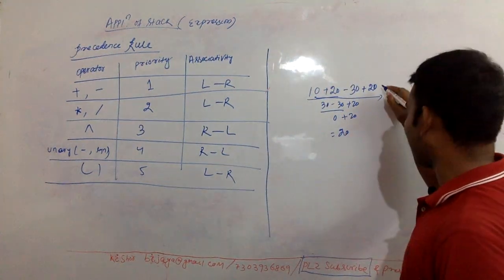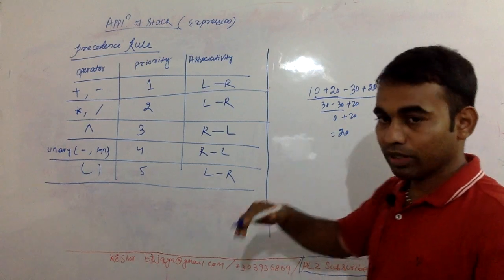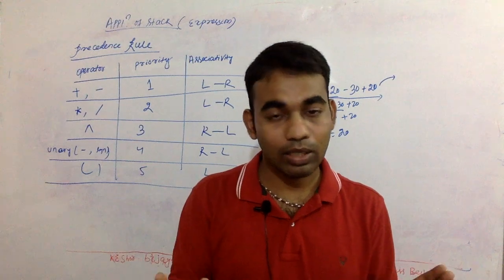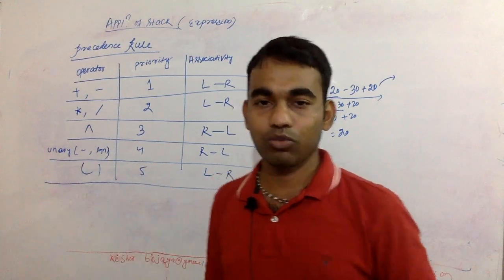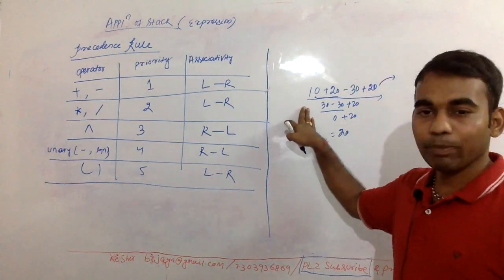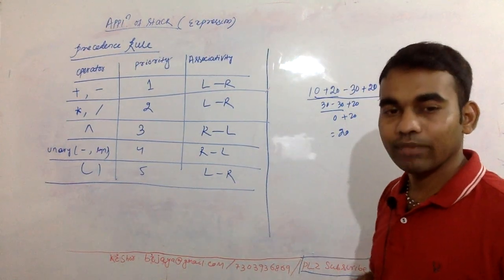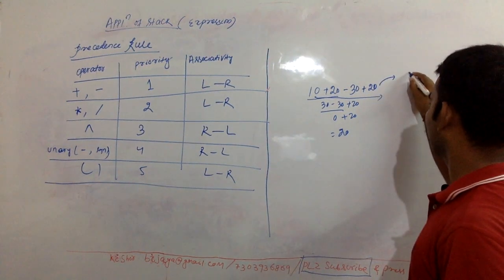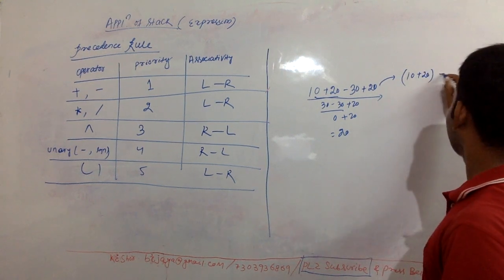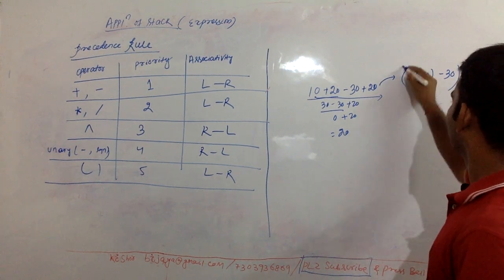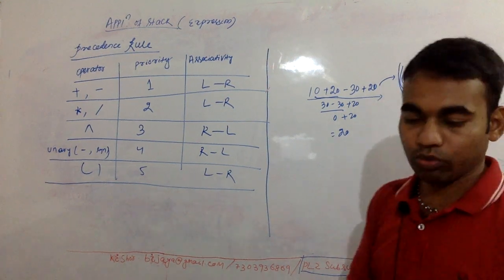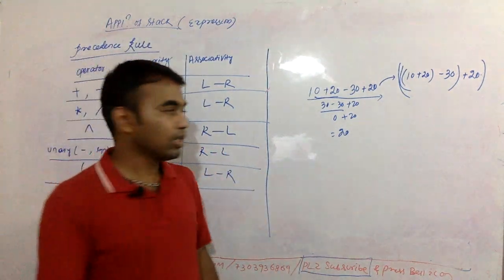So if we put brackets, it becomes clearer. Whenever you go for a conversion, just put brackets to show which operation happens first and which happens last, based on associativity and priority. For this example, you do 10 plus 20 first, then the result minus 30, then the result plus 20. The bracketing follows that left-to-right order.